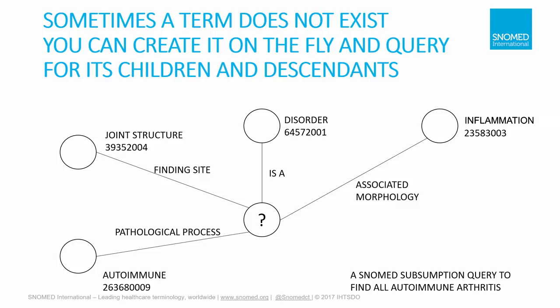Sometimes you might want to find all of the patients that have a particular thing which is not already in SNOMED. So what you can do is make up, just for one time, your own temporary term which is based on ideas related to each other. The software will be able to find all of the children of that. For example, let's say I wanted something which is a disorder that had associated morphology inflammation, a finding site of joint structure, and a pathological process of autoimmune. I could name this query autoimmune arthritis. And even if it didn't exist in SNOMED, I would still be able to make this kind of query and find all of the subtypes — such as rheumatoid arthritis, Reiter's disease, psoriatic arthritis, ankylosing spondylitis, and many others of which I might not be able to think of on my own.